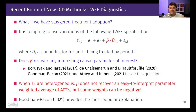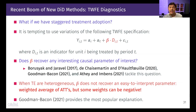For many years we've extrapolated from the 2x2 DiD intuition to this more general setup with several time periods and variation in treatment timing, interpreting beta as an average treatment effect. The bad news — and we've gained a lot of understanding of this in the last five years — is that this regression has a single constant beta for everyone. If you believe units have heterogeneous treatment effects, this single beta does not uncover an easy-to-interpret causal parameter when there is heterogeneity and treatment effect dynamics.